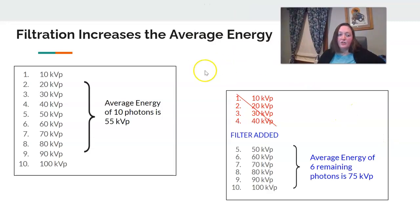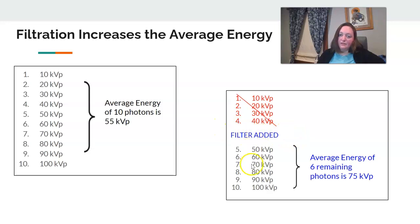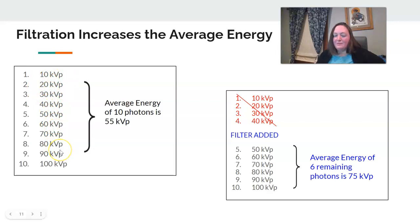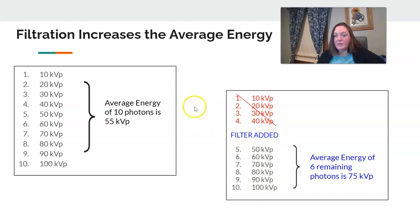Here's an example of how filtration increases the average energy. If we have a collection of 10 KVP values, the average energy of those 10 is 55. If I remove four of those by adding in a filter, the average of the remaining ones is higher. Those lower-energy stragglers get kicked out, and the remaining energies of the beam are collected, giving a new average with higher energy.